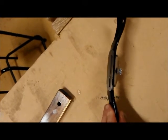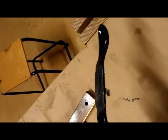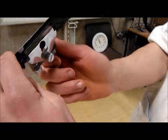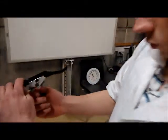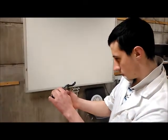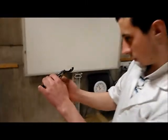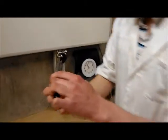For shaping convex curves, we use the spokeshave with the flat sole. Adjust the blade so that it is protruding about 1-2mm past the sole. This can be adjusted again afterwards if you are taking off too much material or not removing enough.